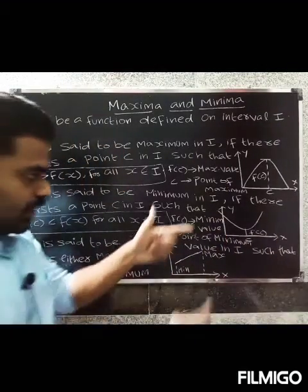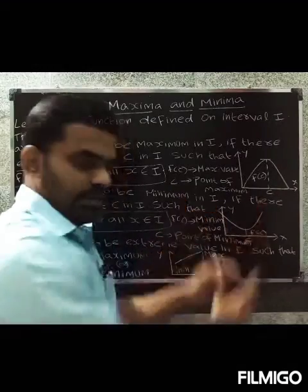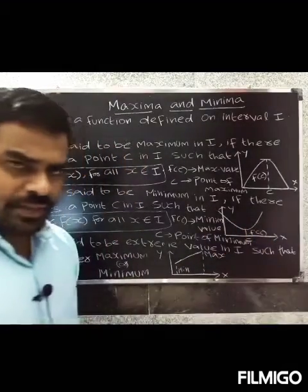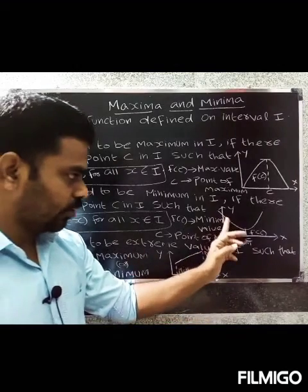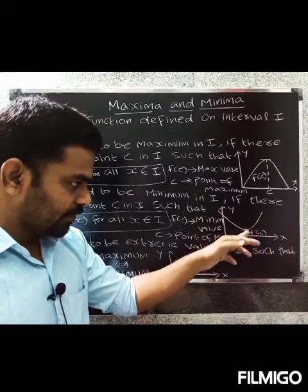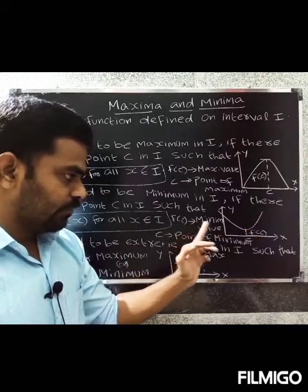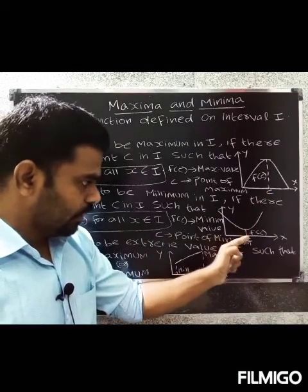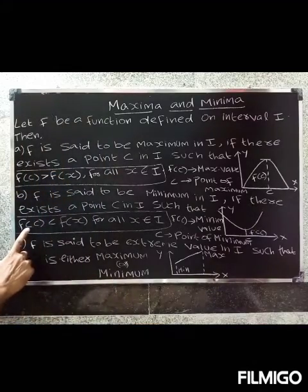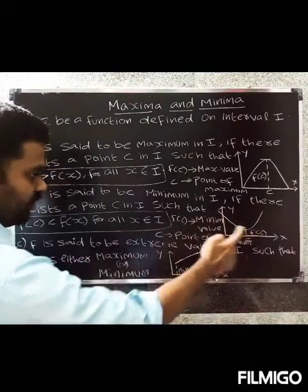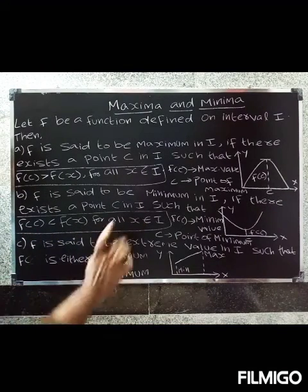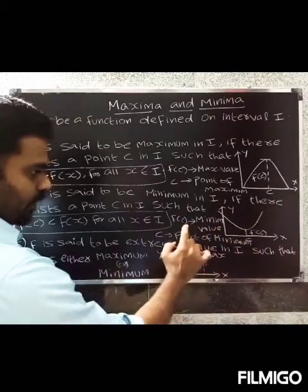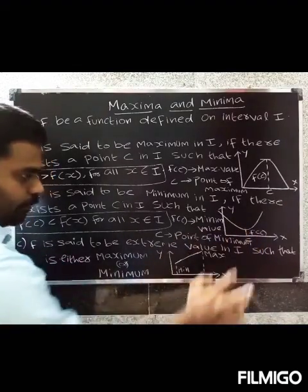On the interval, the function can increase or decrease. The minimum point is the lowest point — that is the minimum. The value f of c at that point is the minimum value. For example, if the values are 5, 1, and so on, then 1 gives f of c as the minimum value. So f of c is less than f of x for all x belonging to I. The point c is called the point of minimum.